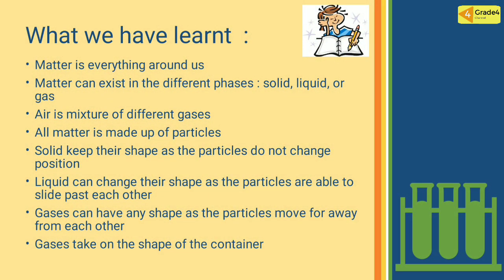Okay guys, let's have a quick review of what we have learned today. Number one: matter is everything around us. Number two: matter can exist in different phases — solid, liquid, or gas. Number three: air is a mixture of different gases. Number four: all matter is made of particles. Number five: solids keep their shape as the particles do not change position. Number six: liquids can change their shape as the particles are able to slide past each other. Number seven: gases can have any shape as the particles move far away from each other. Lastly, gas takes on the shape of the container.